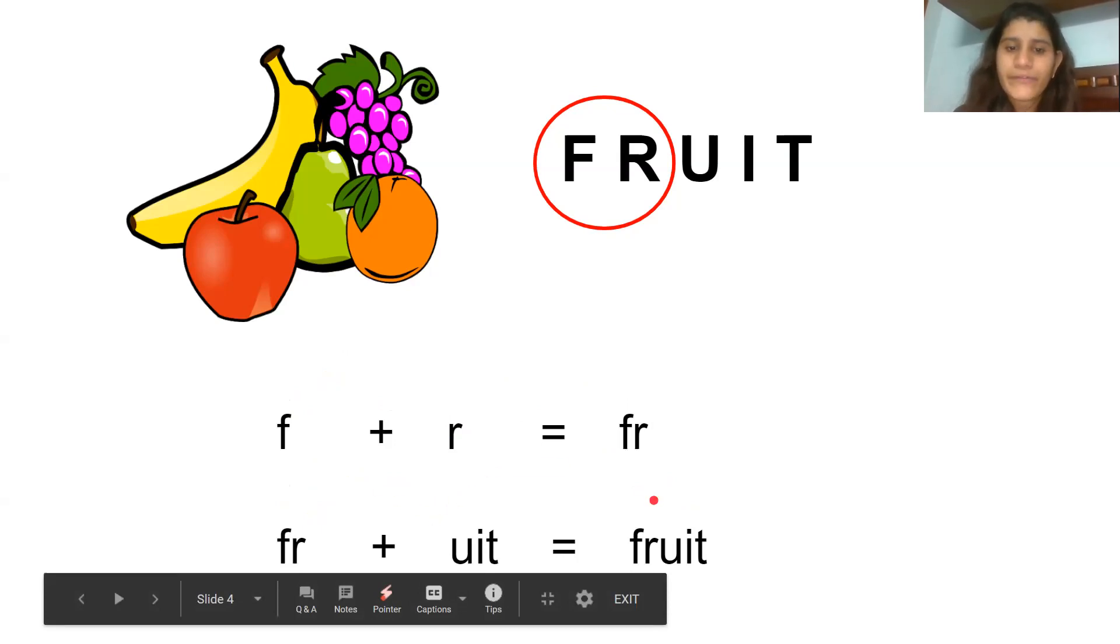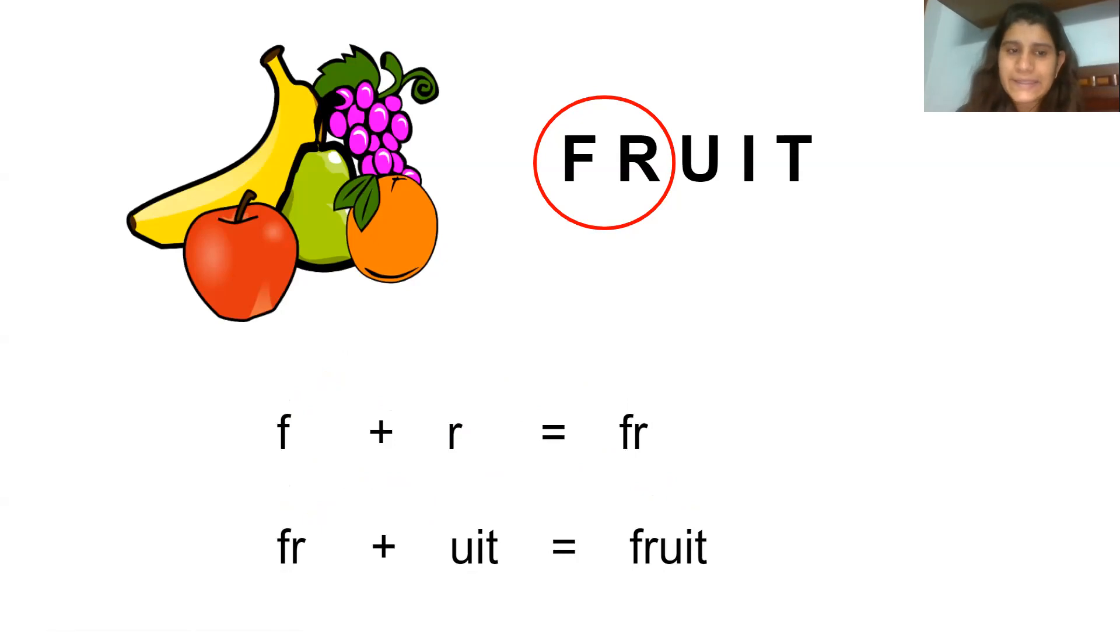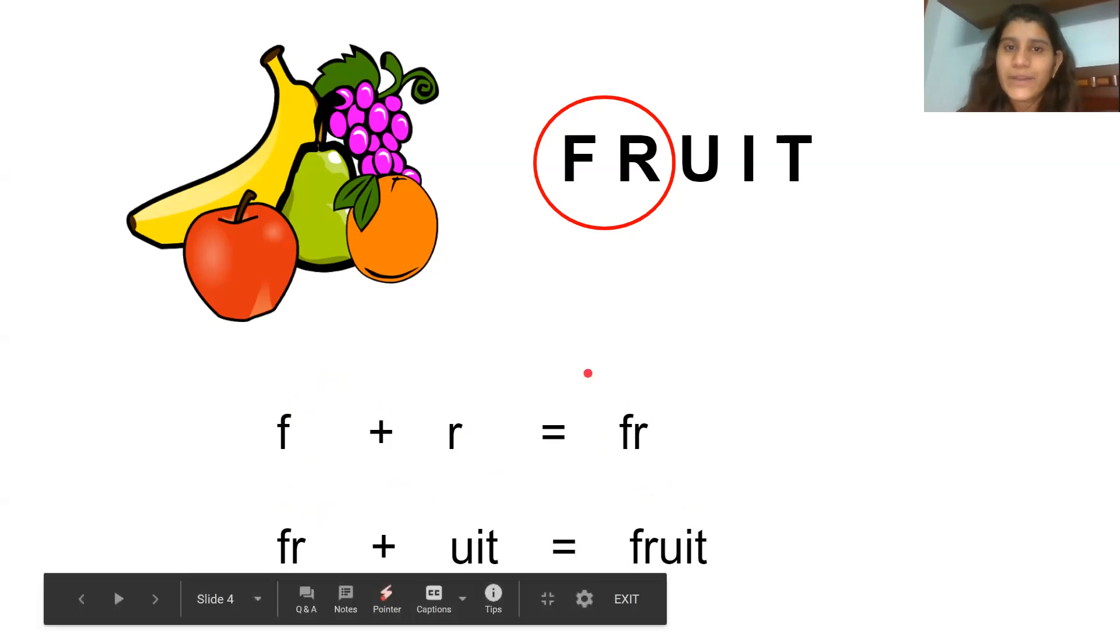Listen. Fr-oot. Fruit. Listen. Fr-oot. Fruit. Repeat. Fr-oot. Fruit. Repeat. Fr-oot. Fruit. Great. So now we know fr is written as FR. Jab bhi aapko fr awaas unai dee, you will write FR.